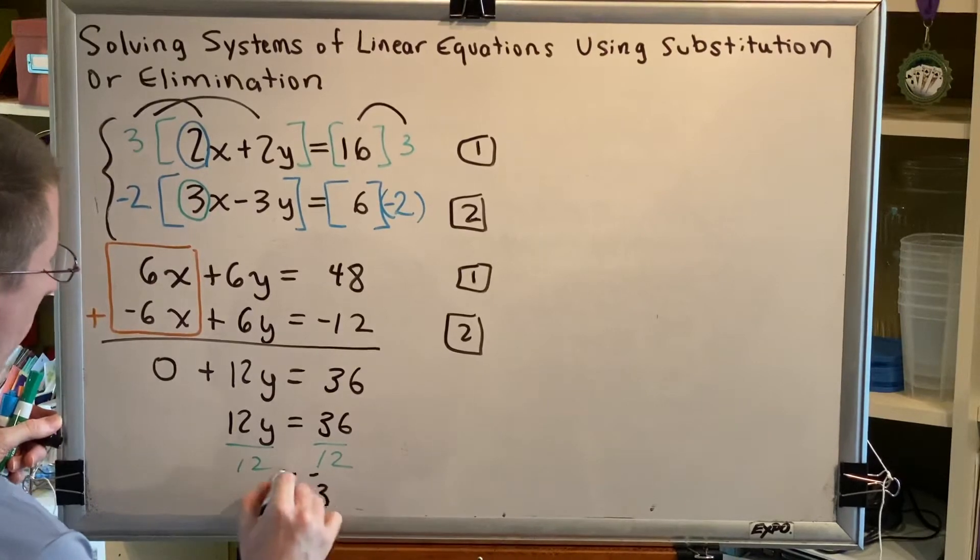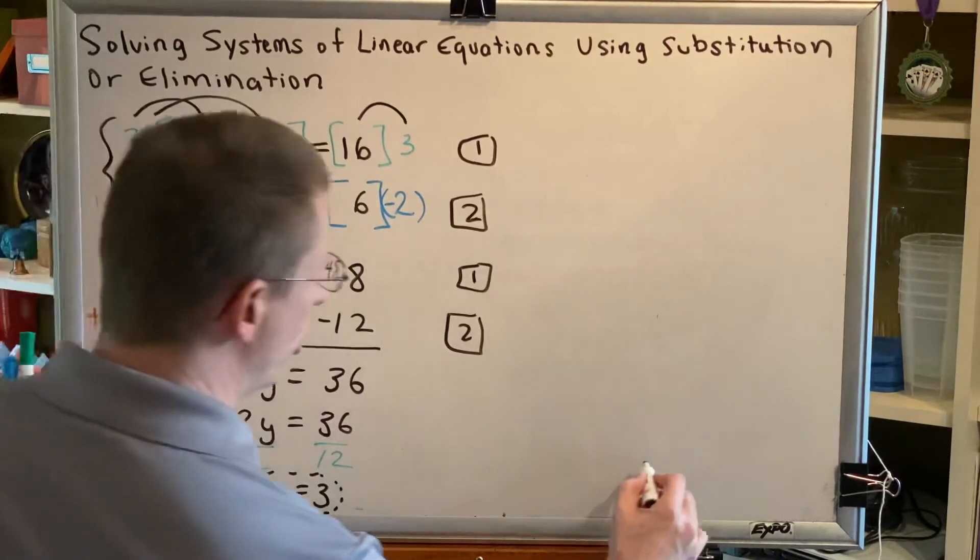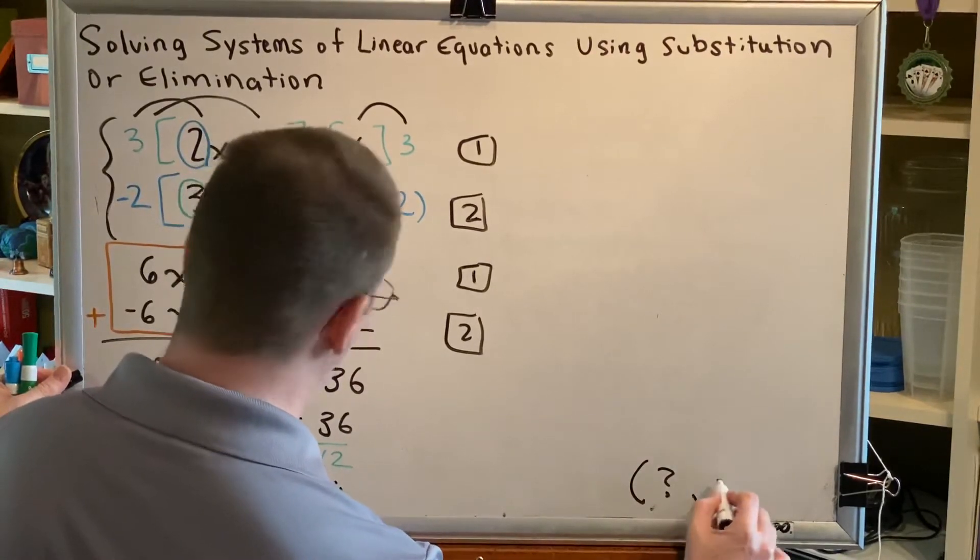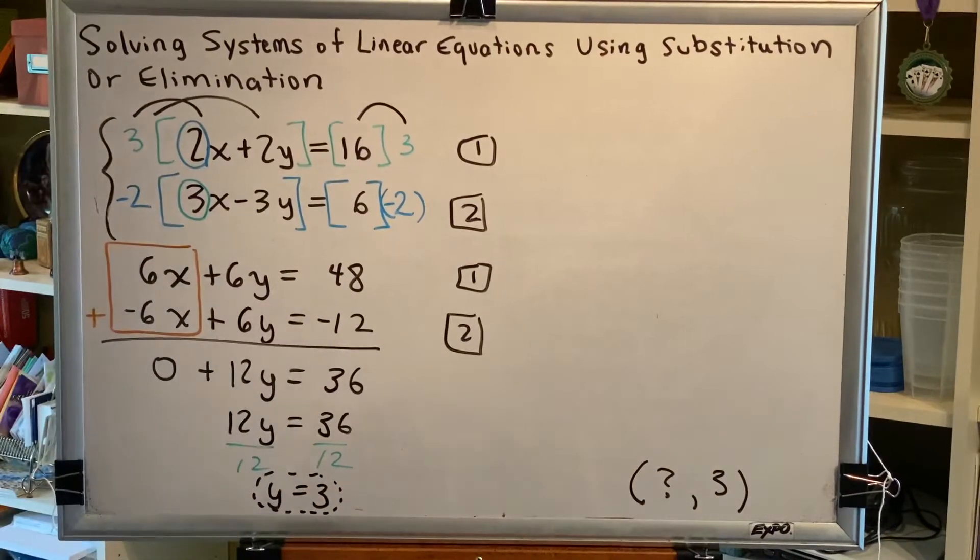Now this is not the end of the problem. Remember, solutions to systems are ordered pairs. So we know that the answer is going to be some x value, comma, a y value of 3. Now we just have to find what is that x value.